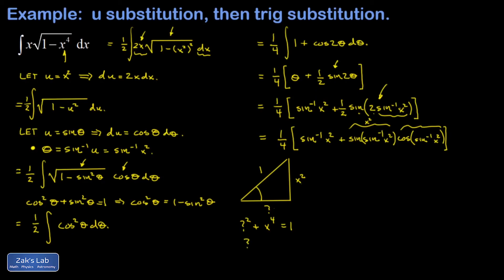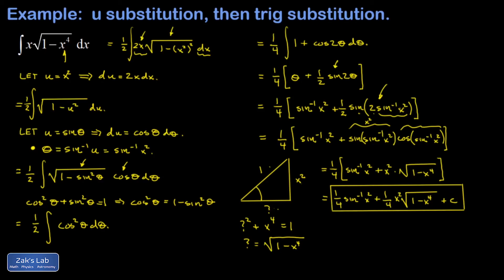So the missing adjacent side is the square root of 1 minus x to the fourth. Putting it all together: the sine of the angle whose sine is x-squared is just x-squared, and the cosine of that angle is adjacent over hypotenuse — giving square root of 1 minus x to the fourth. I could leave it that way or distribute the one-fourth, and remembering the plus C at the end, we're done.